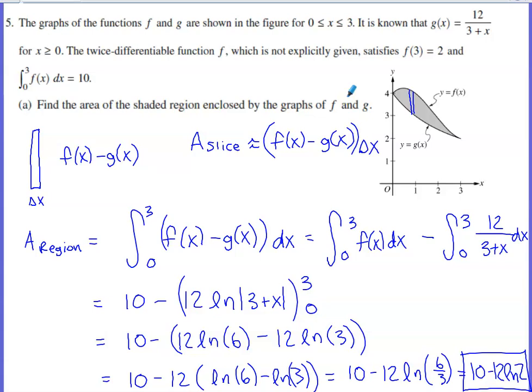Part a asks us to find the area of the shaded region enclosed by the graphs of f and g. Breaking this down into three steps: slice, approximate, integrate. If I take a vertical slice of this region, any vertical slice I take, the top is always on f of x, the bottom is always on g of x.